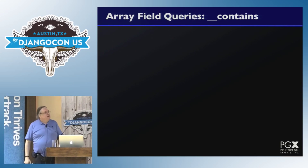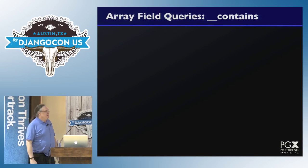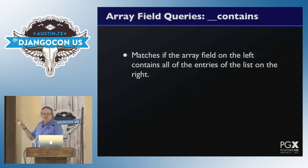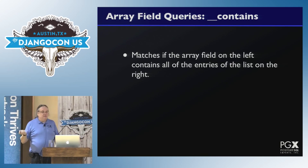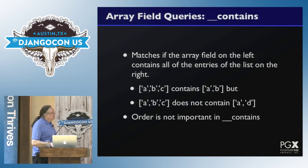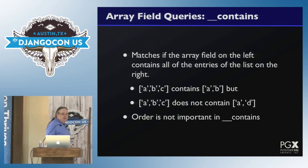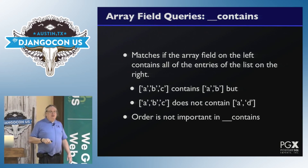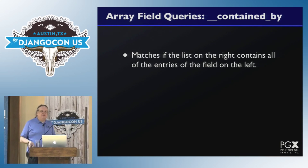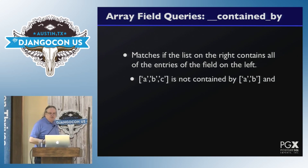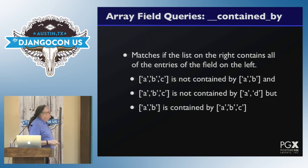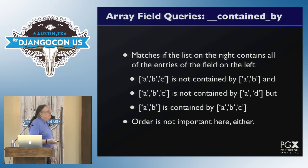Once you've got array fields, you have array field queries. The basic one is 'contains' — it matches if the array field on the left contains all of the entries of the list on the right. So ABC contains AB, but it does not contain AD. Order is not important in a contains query. You can also have 'contained_by', which is effectively the reverse — matches if the list on the right contains all the entries of the field on the left. Order is not important here either.